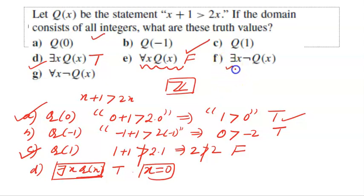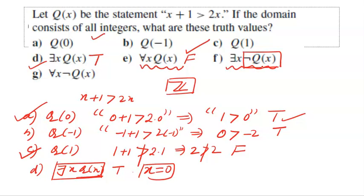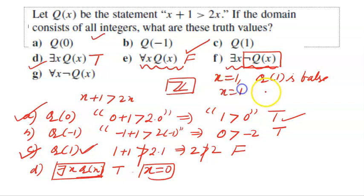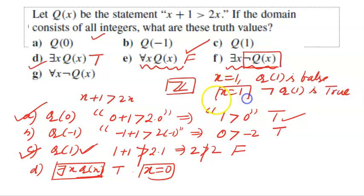For ∃x ¬Q(x): this is true if there exists some value of x for which ¬Q(x) is true, meaning Q(x) is false. We already saw that Q(1) is false, so ¬Q(1) is true. Since we found a value of x for which ¬Q(x) is true, this statement is true.